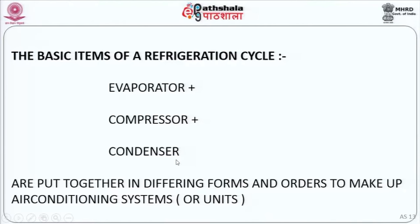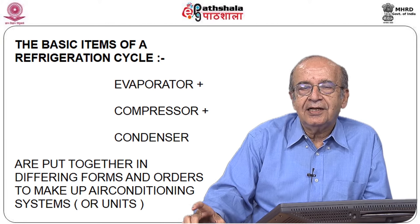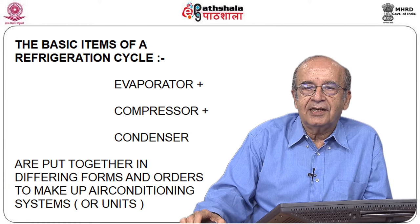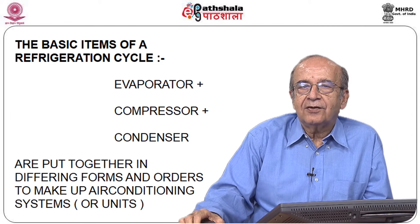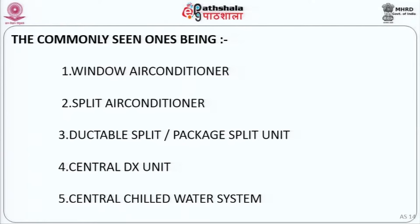All these systems have these three components as an essential requirement: the evaporator, the condenser, and the compressor which links the two. How they are put together forms the system. The ones commonly seen using the vapor compression cycle are: a window air conditioner, a split air conditioner, a ductable split which is a larger version, and the larger version of the three devices put together called a central DX unit. This unit has a handicap that it is a single-zone device, and for multi-zone applications it gives way to a central chilled water system.